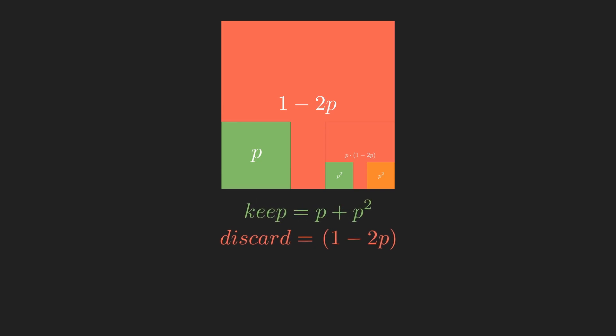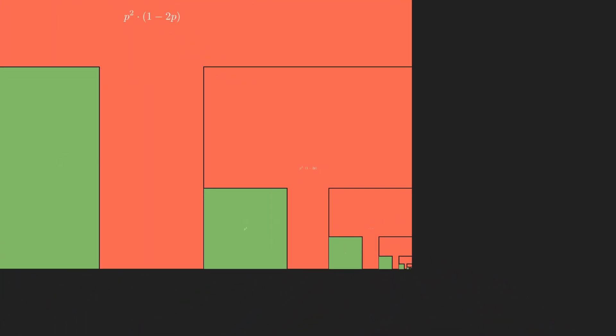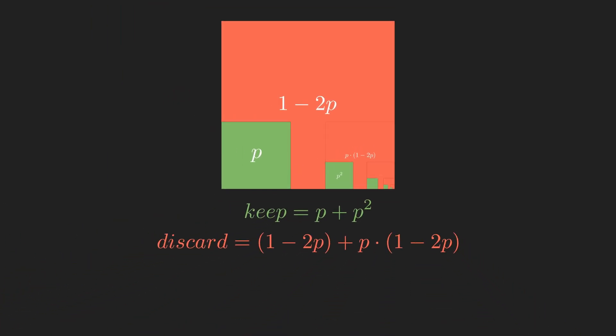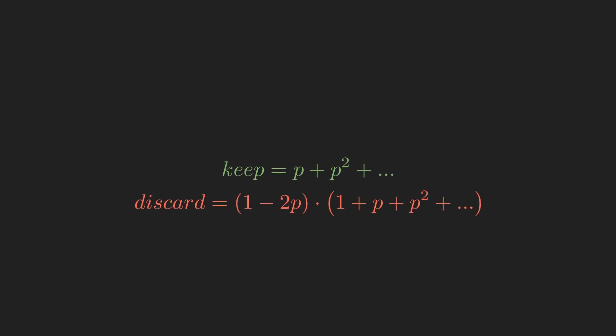Again, we can repeat this on smaller and smaller squares, meaning the working square will eventually disappear. Our discard sequence is nearly equal to some multiple of our keep sequence. It's just shifted down by p, so instead of starting at p, it starts at 1.